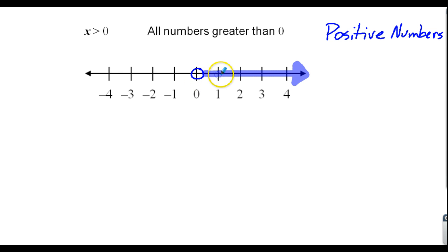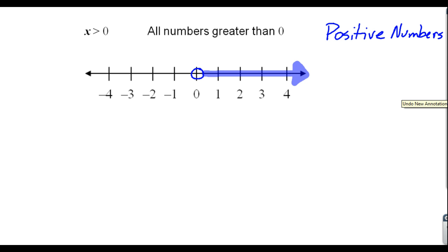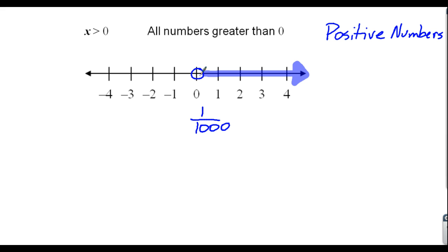The reason I fill in every number in between is because any positive number could also be a decimal — I could say 1.8, and is 1.8 greater than zero? Yes. I could say 1.1, and is that greater than zero? Yes. I could say 1.4 — is that greater than zero? Yes. Even 1.00 or 1.000 are still bigger than zero. I could keep doing that over and over. Really, what you're saying is even the smallest piece, as long as it's a little bit over zero, it's still over zero.